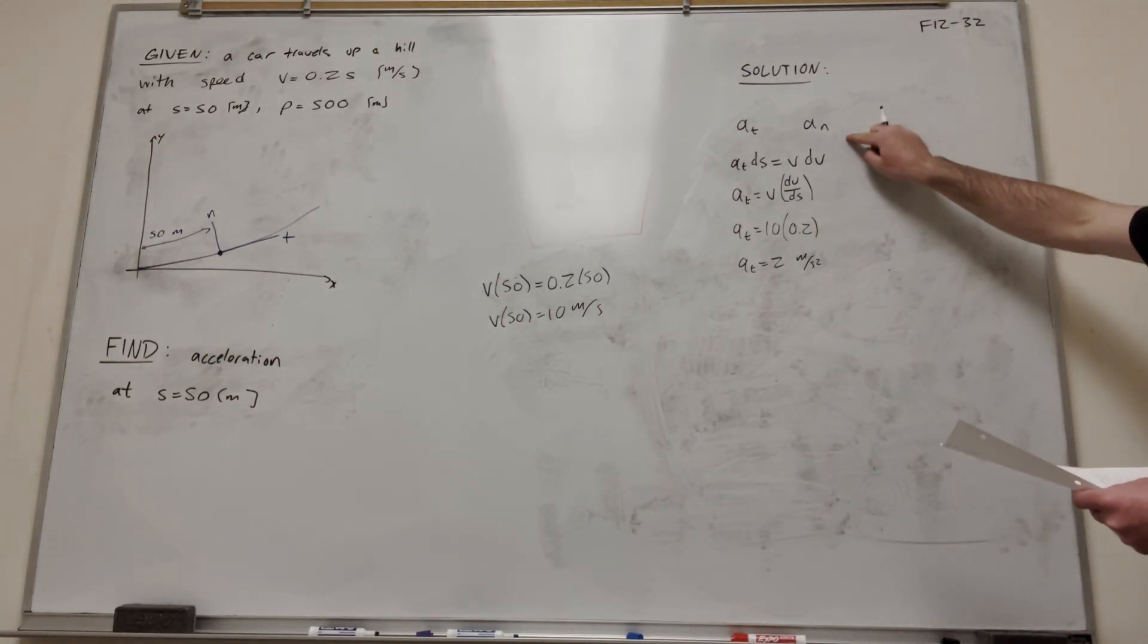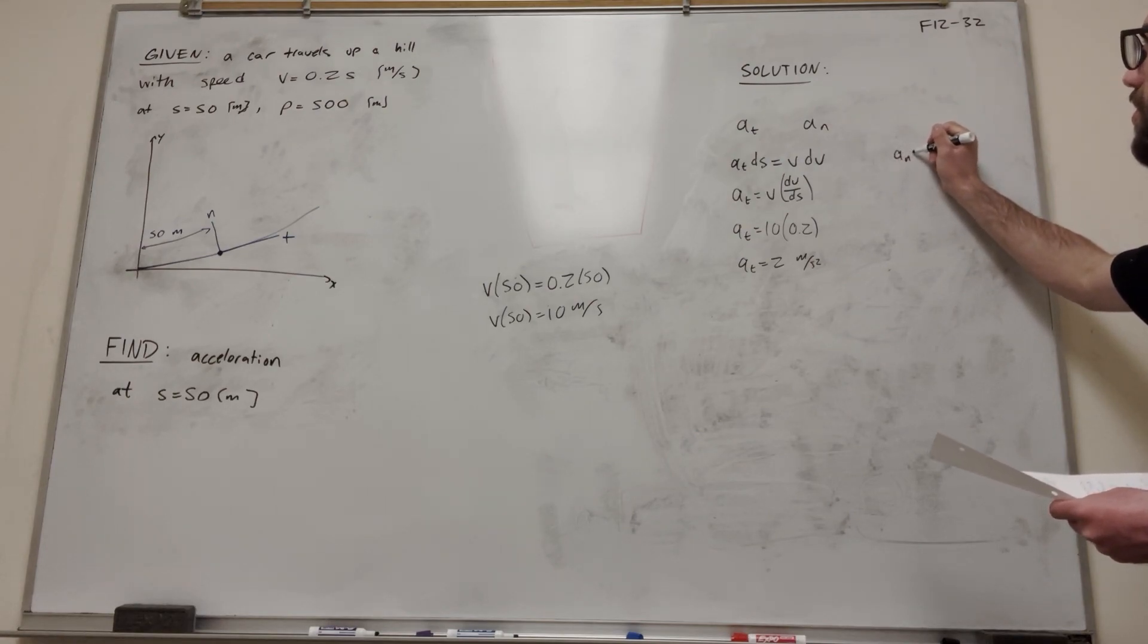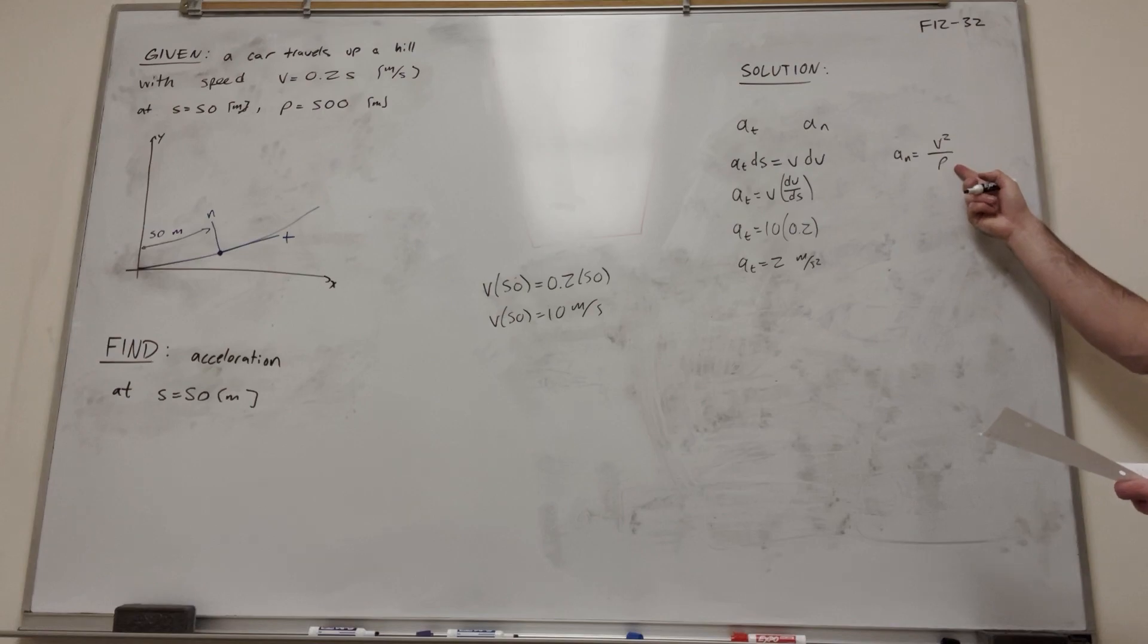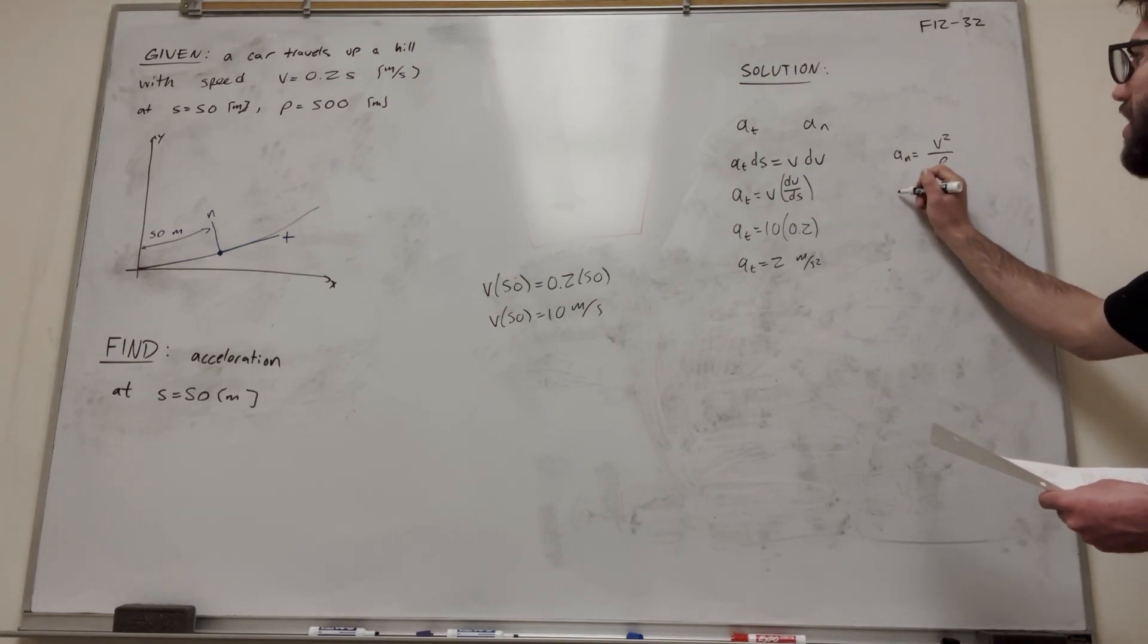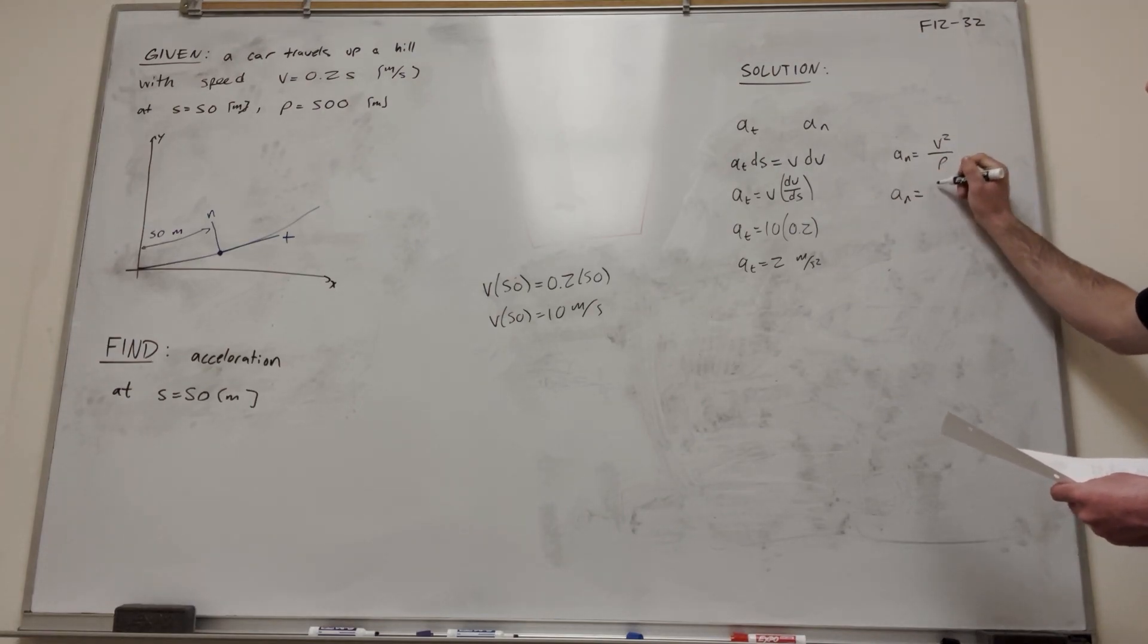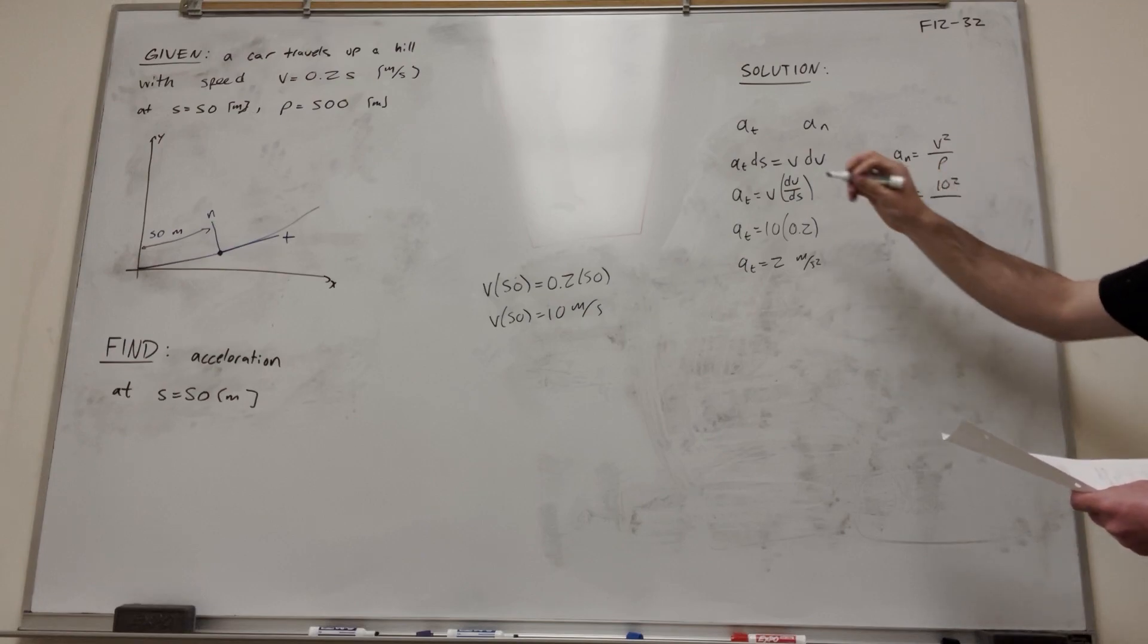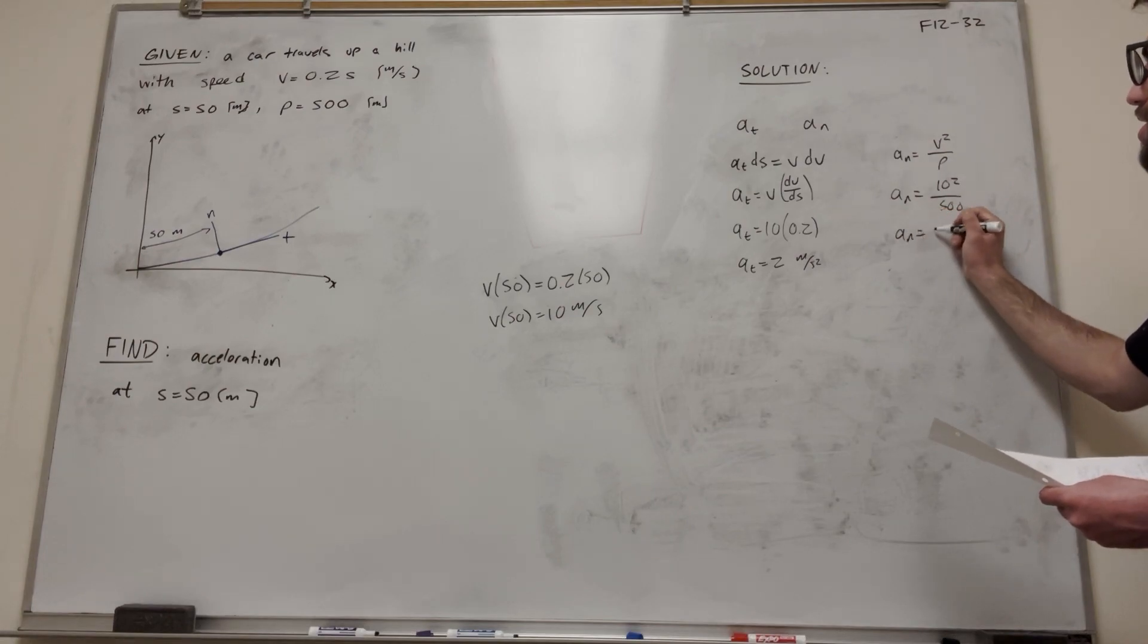So let's go ahead and find acceleration normal. Acceleration normal is equal to velocity squared over the radius of curvature. That's why we're given radius of curvature for this equation. We have velocity, we just calculated that to be 10. The radius of curvature is 500. So this is going to give you 100 over 500, which is going to be 0.2 meters per second squared.